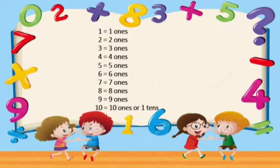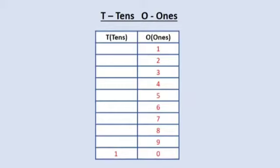It means when 10 comes, we call it 1 ten. Look — here is counting from 1 to 10. And where does each number sit? 1 is under the ones place, 2 is under the ones place, 3, 4, 5, 6, 7, 8, 9 — they all sit under the ones place.